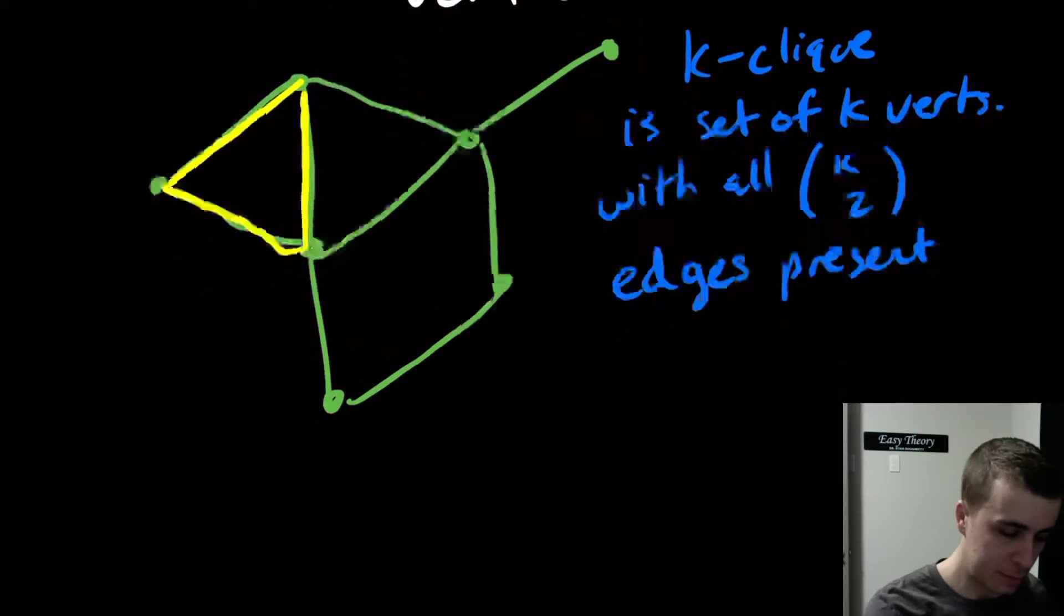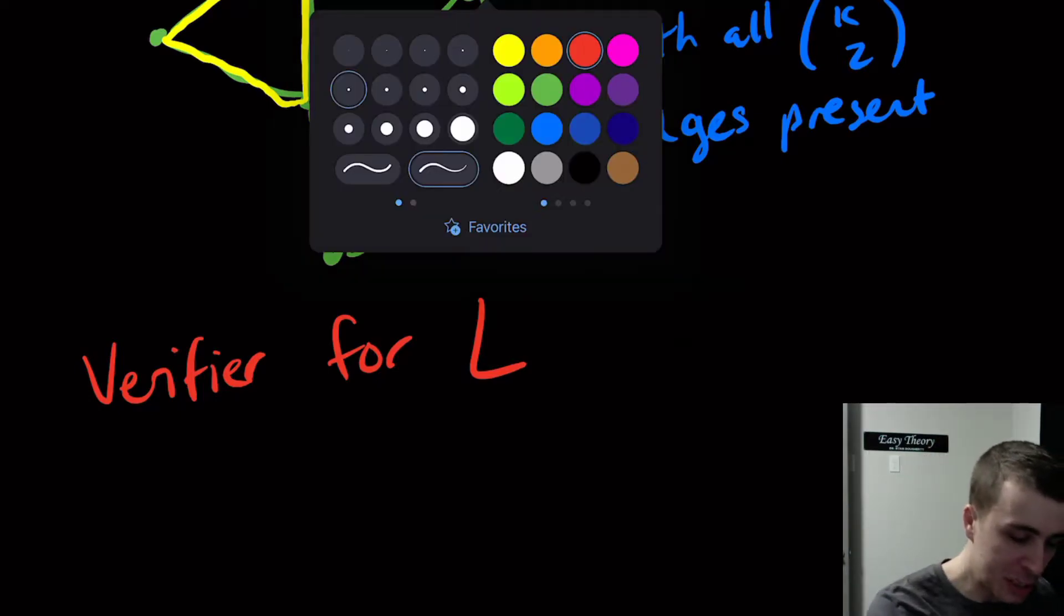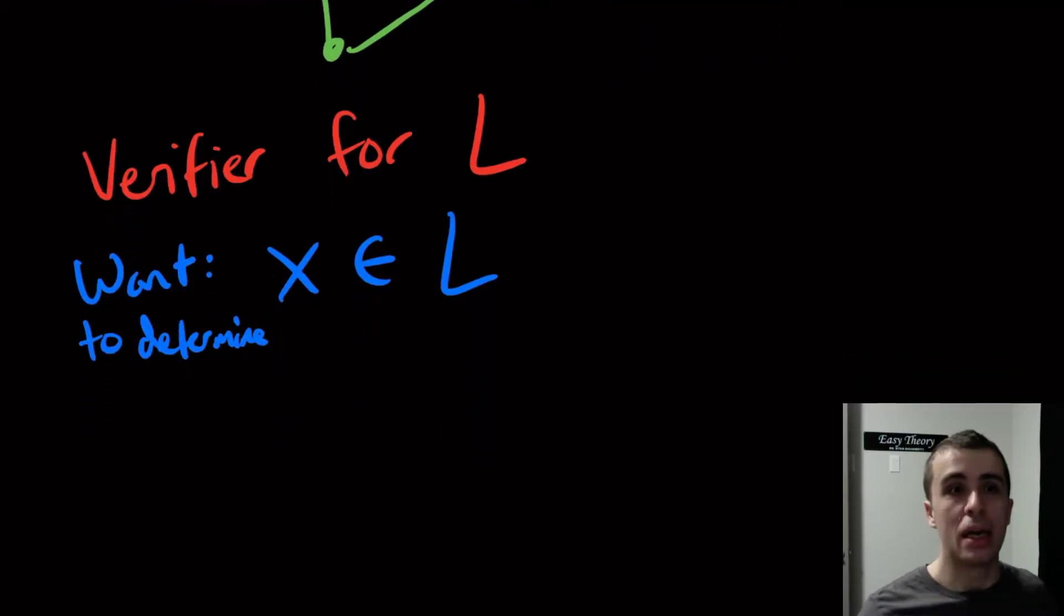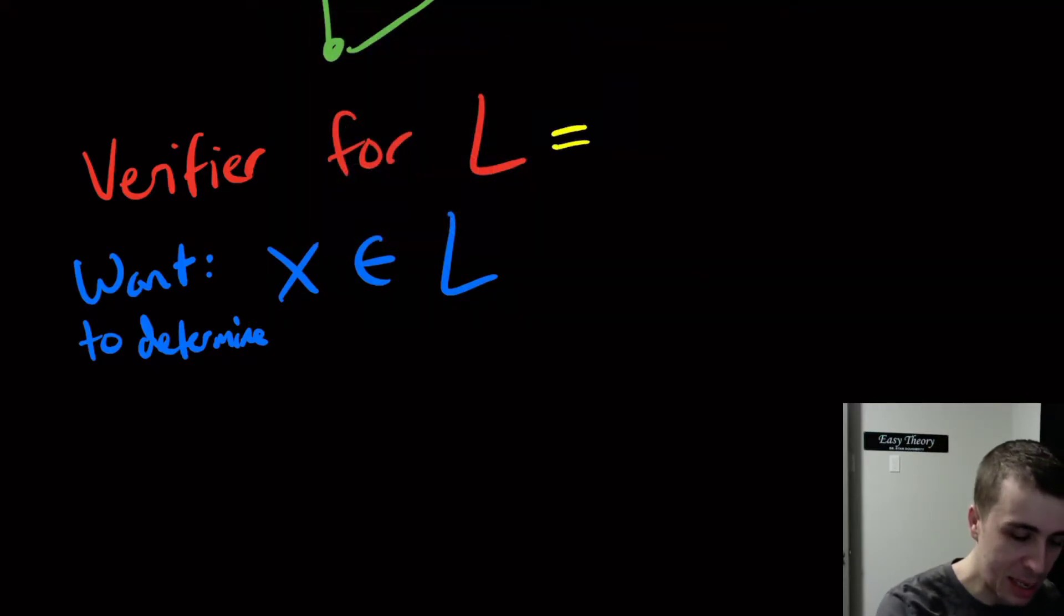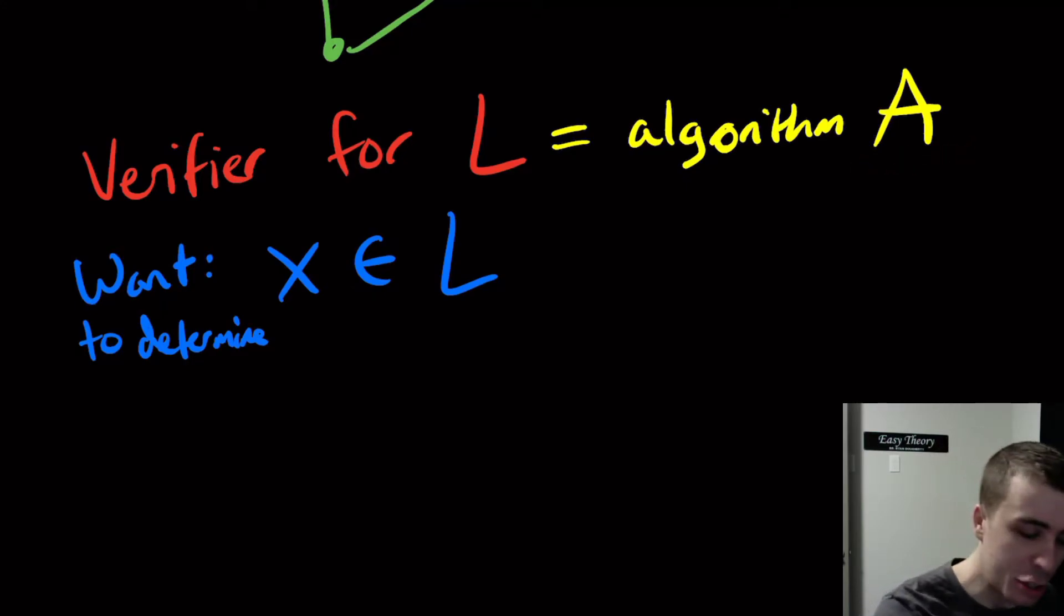So formally, it's an algorithm. A verifier is an algorithm, let's say it's a verifier for a language L, and what that is saying is that I provide additional info to you and you can verify whether an example string is in this language. Let's say that we want to determine if some string X is in the language or not. The algorithm takes two inputs, whereas any particular algorithm for L would obviously only take one input, X.